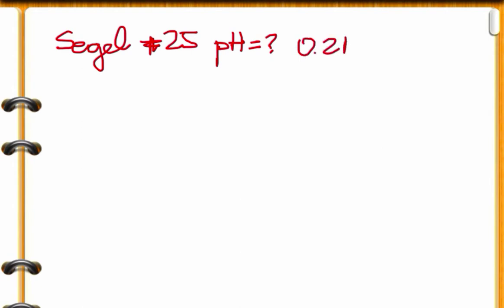Okay, so the problem asks, what's the pH of a 0.2 molar solution of A, phosphoric acid, B, KH2PO4, C, K2HPO4, and D, K3PO4.